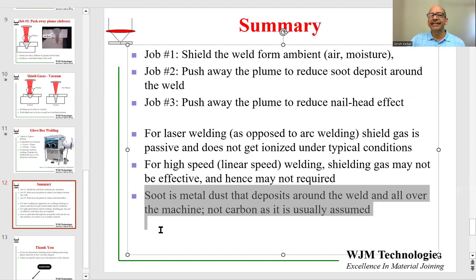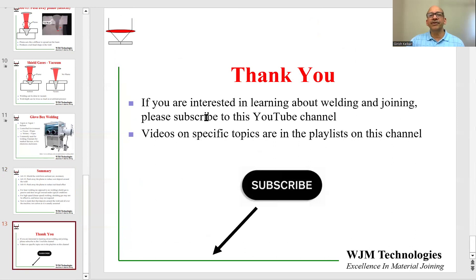The final thing to keep in mind is that the soot that forms around the weld is actually fine metal dust deposited around the weld and all over the machine — it is not carbon. This is one of the common misconceptions in laser welding: that the soot which is black in color must be carbon. But that is not true. Thank you for your time. If you are interested in learning more about welding and joining, please subscribe to this YouTube channel. There are many other videos in different playlists including arc welding, laser welding, welding and metallurgy, and weld design.